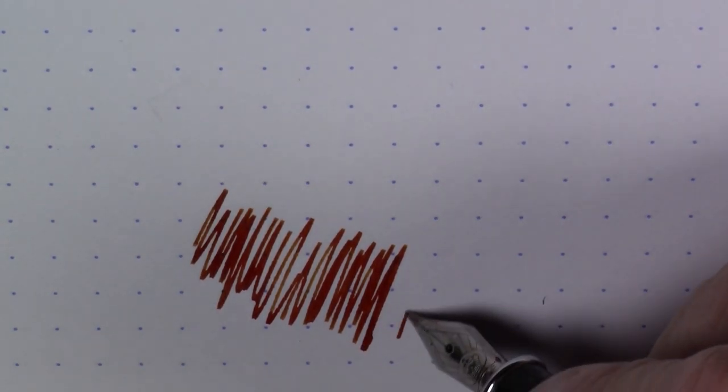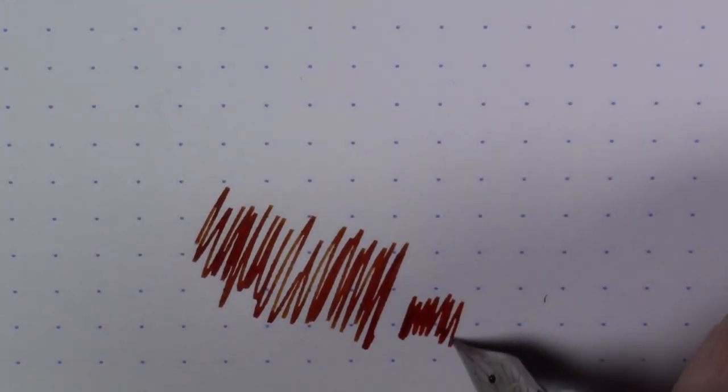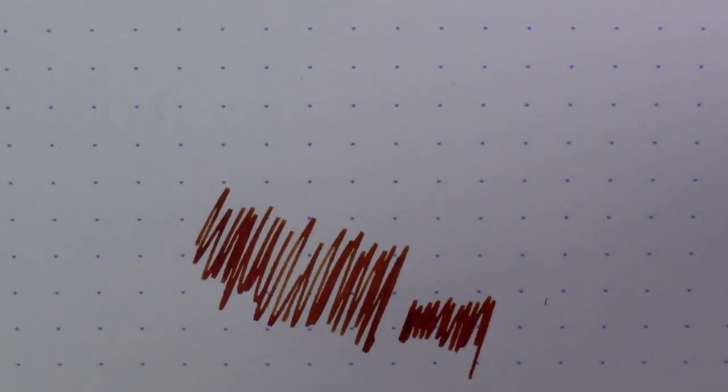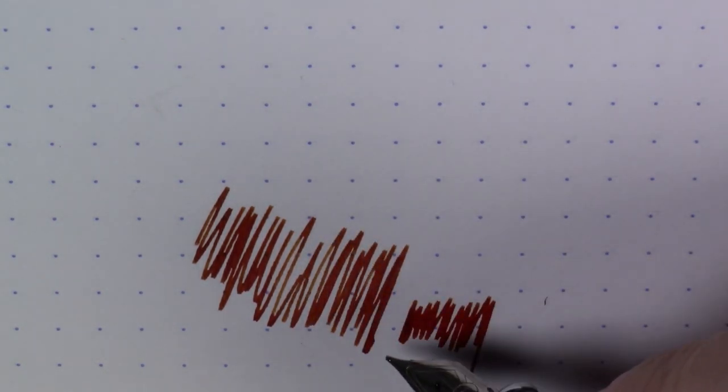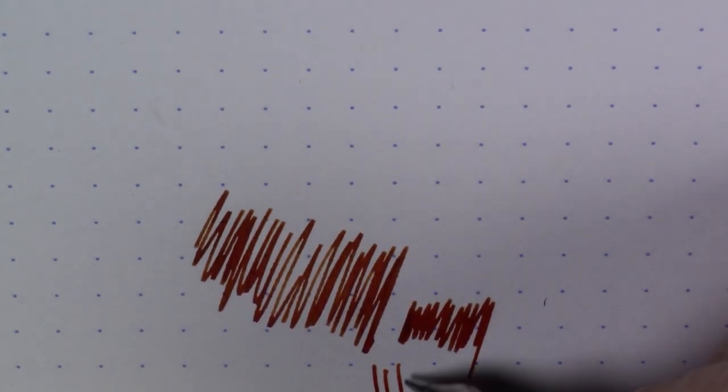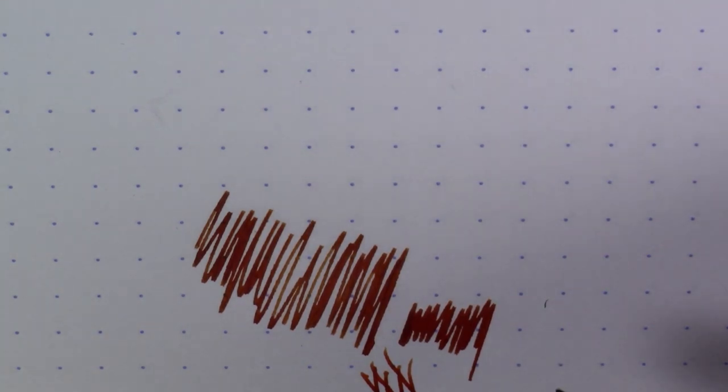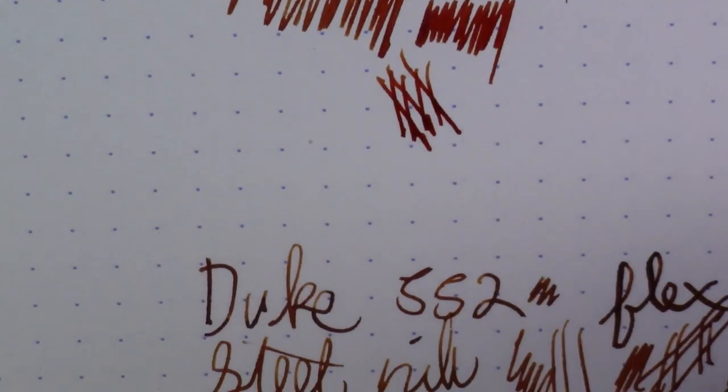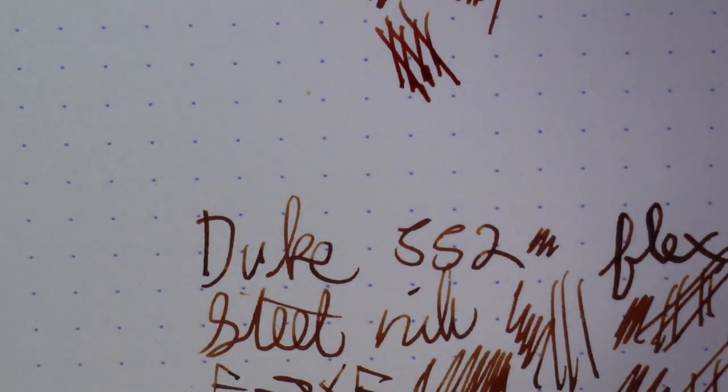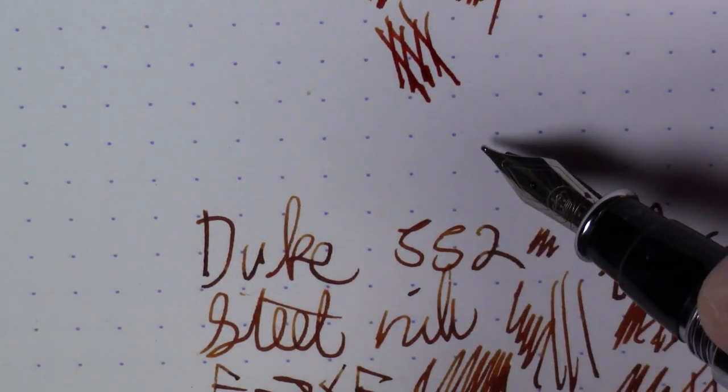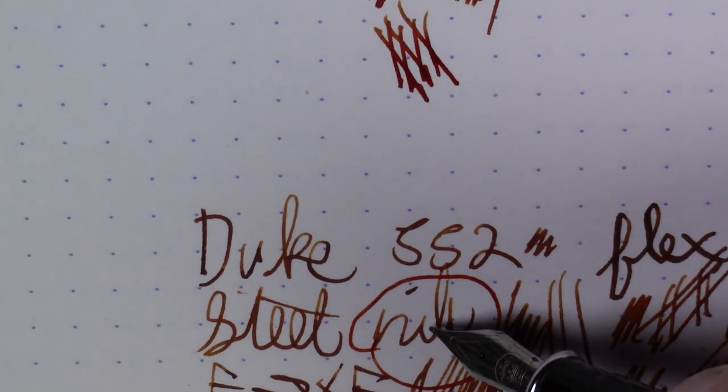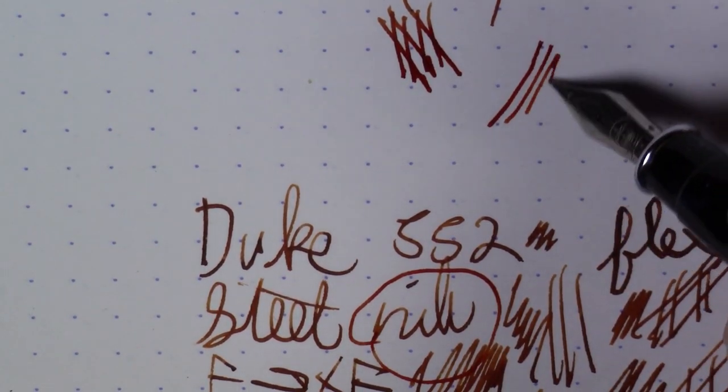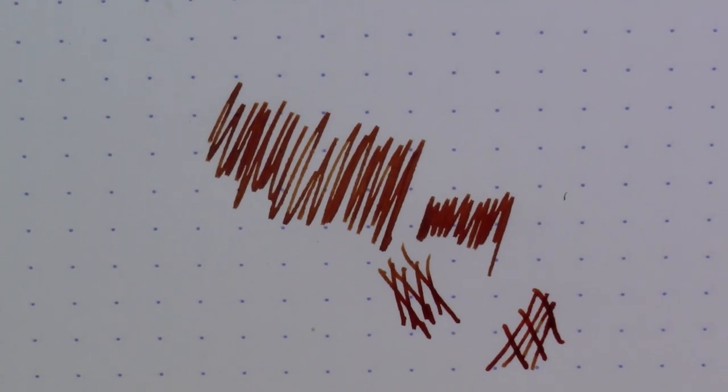This ink going on wet and going on and drying, I do feel it changes quite a bit. It's definitely more of a burnt orange initially, and then it mellows and matures to more of a golden brown color. But it does shade quite a bit. I mean, you can see the shading going on there. So this is actually a nice shading golden brown ink.